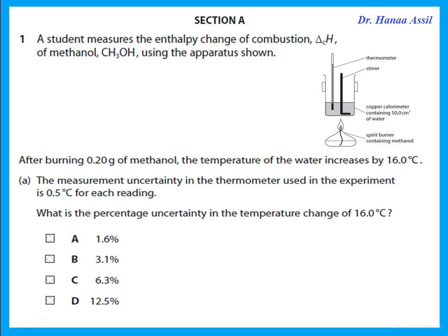The first question says: a student measures the entropy change of combustion of methanol using the apparatus shown. After burning 0.2 grams of methanol, the temperature of the water increases by 16 degrees Celsius. The measurement uncertainty in the thermometer is 0.5 degrees Celsius for each reading. What is the percentage uncertainty in the temperature change? Temperature change means you used the thermometer twice, so uncertainty is 2 times 0.5 over the reading times 100. This comes out to be 6.3, and my answer is C.